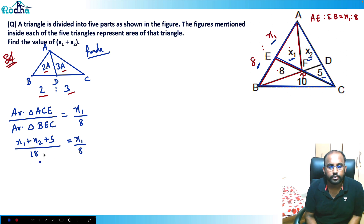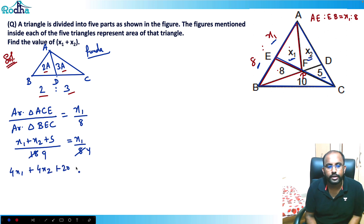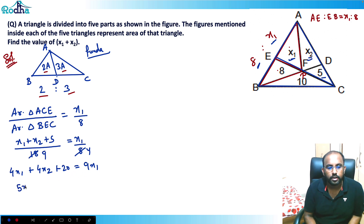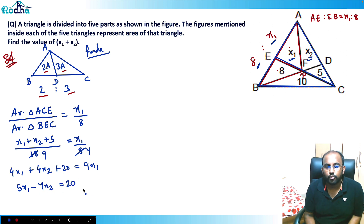Solving this: cancel by 2 — so 4x1 + 4x2 + 20 = 9x1. That gives us the first equation: 5x1 minus 4x2 equals 20.